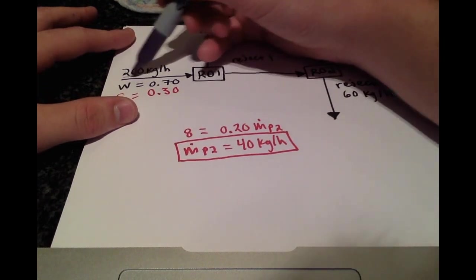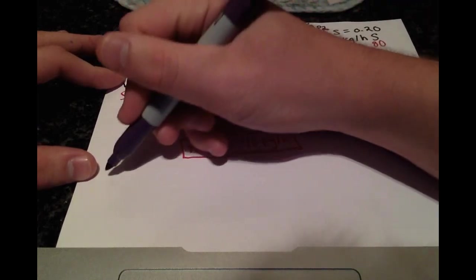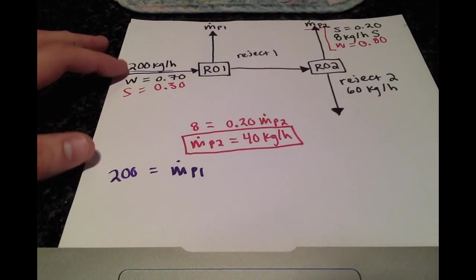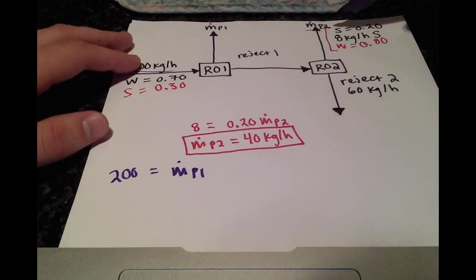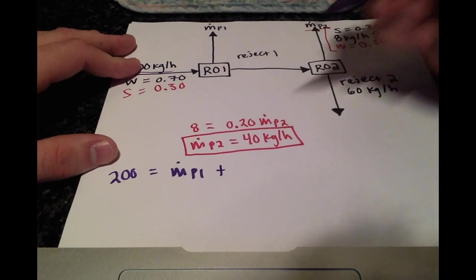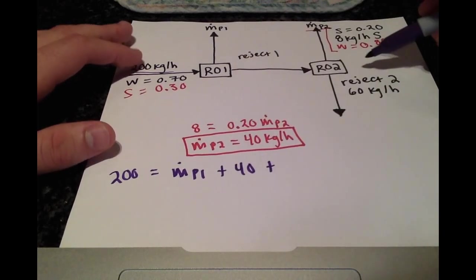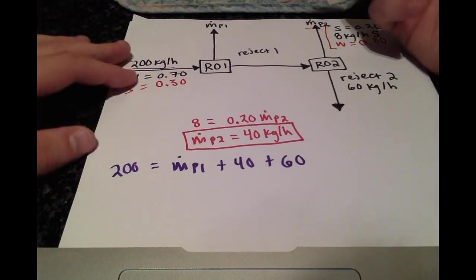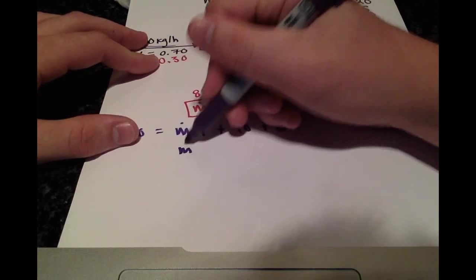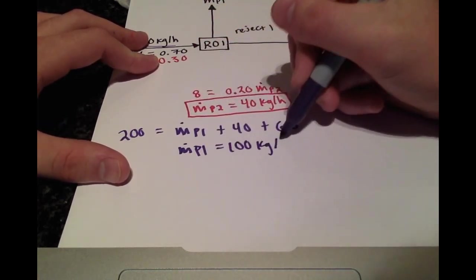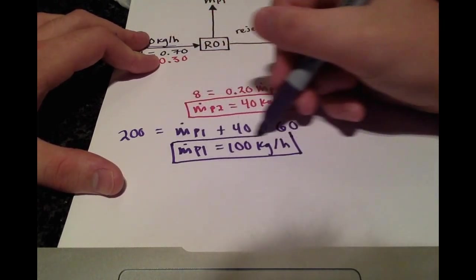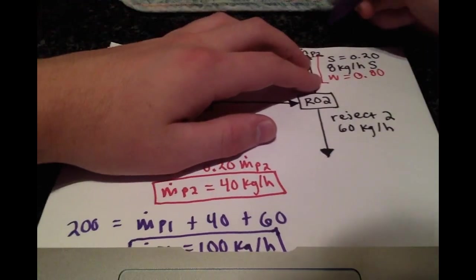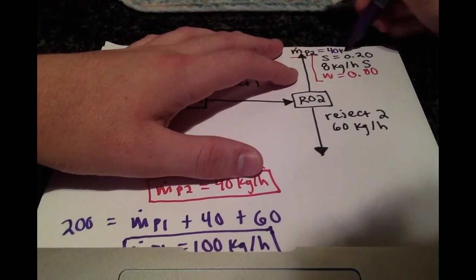Look at what's coming in and what is going out overall. We have 200 kilograms per hour coming in and leaving we have mass flow rate of permeate 1, plus the mass flow rate of permeate 2, which we just solved for, is 40 kilograms per hour, and then for the RO2 reject stream, that's 60 kilograms per hour. From here, we can solve for MP1, and that's just 100 kilograms per hour. So we can fill that information in.